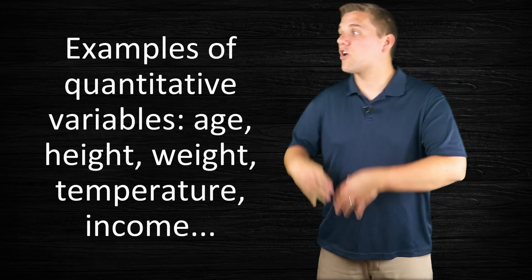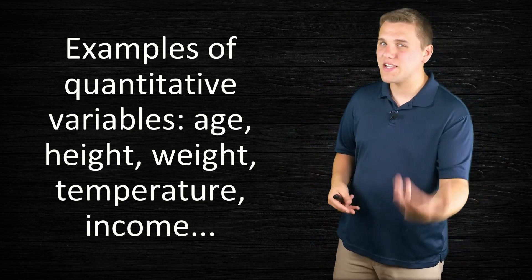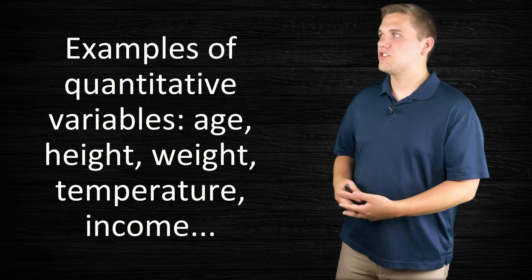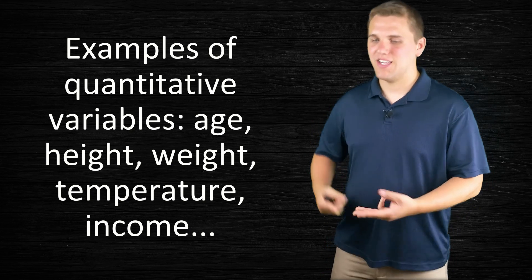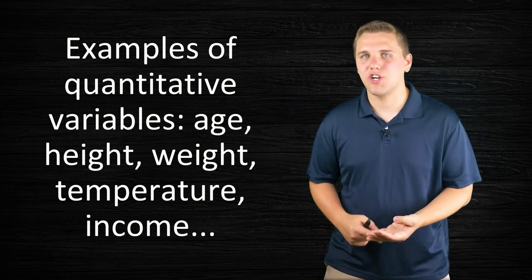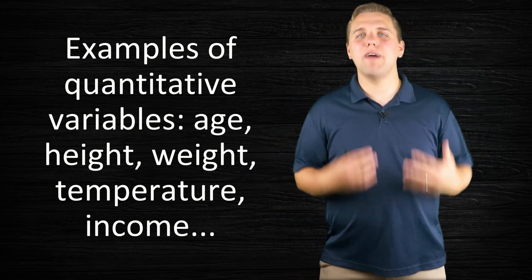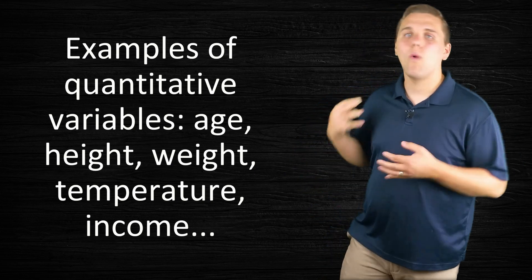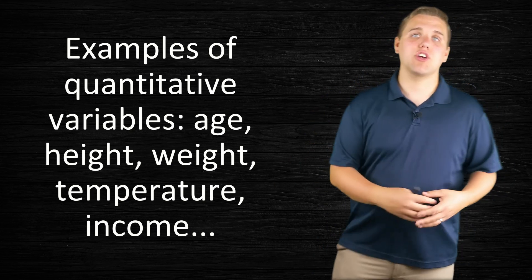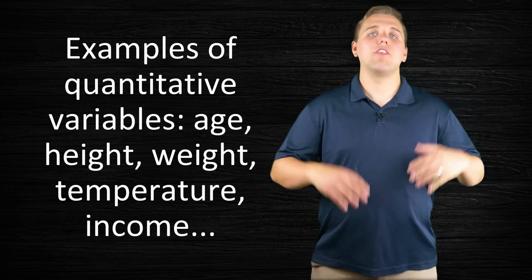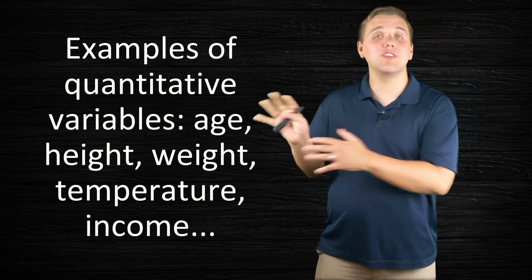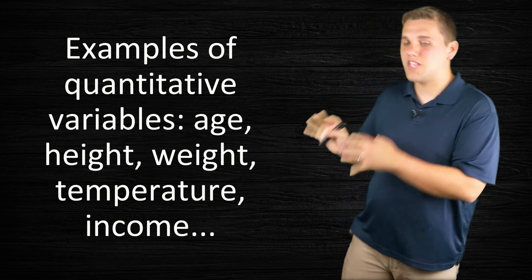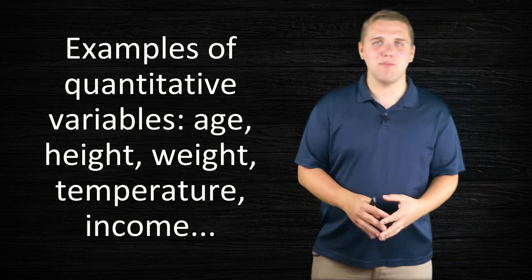Here I'm going to give you an example of a quantitative variable. Remember these are basically numerical in nature. Age, height, weight, temperature - these are all things that you can measure with some sort of unit. Age could be measured in years, height in inches, weight in pounds, temperature in Celsius. There's all different types of ways of measuring these things. So these are quantitative variables in nature.